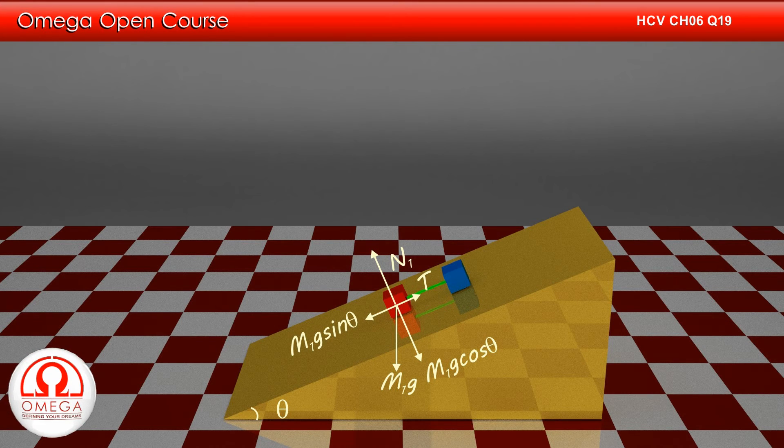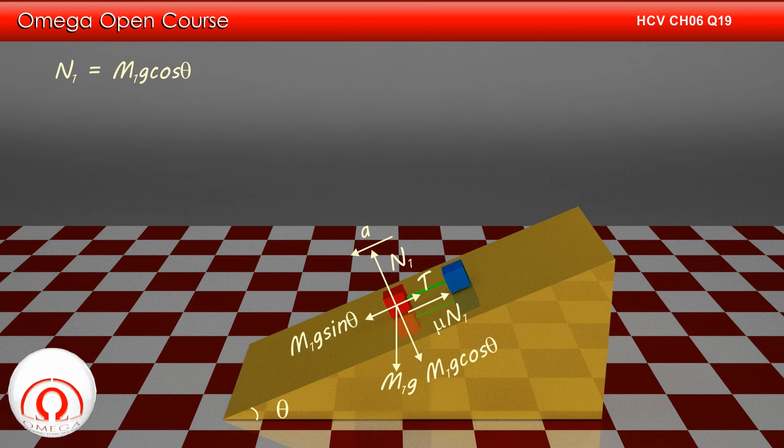Tension in the rod T is pulling the block up along the incline and kinetic friction of magnitude mu N1 is acting up along the incline. The block is moving down the incline with acceleration a. Balancing the forces in direction perpendicular to the incline, we get N1 equals M1 g cos theta.